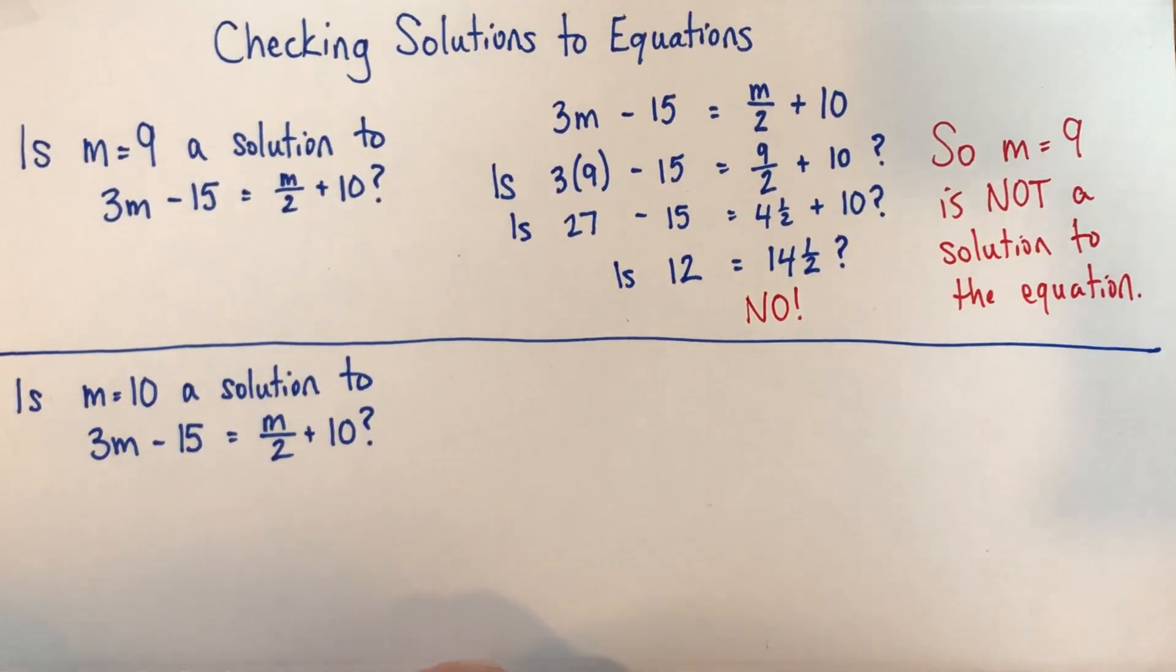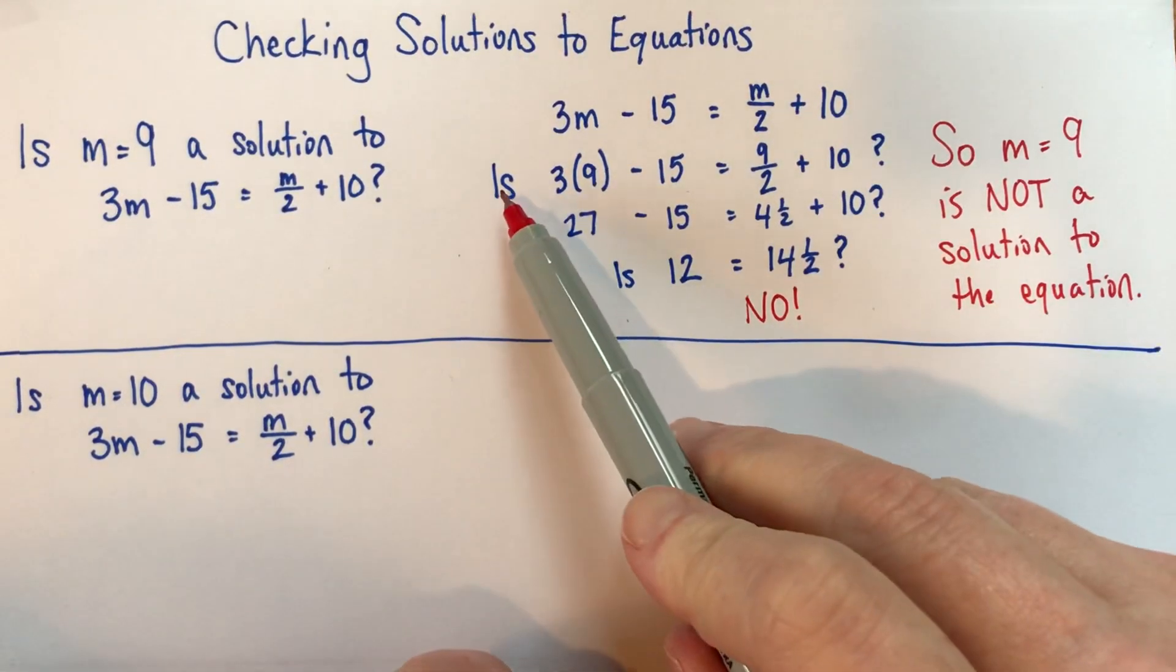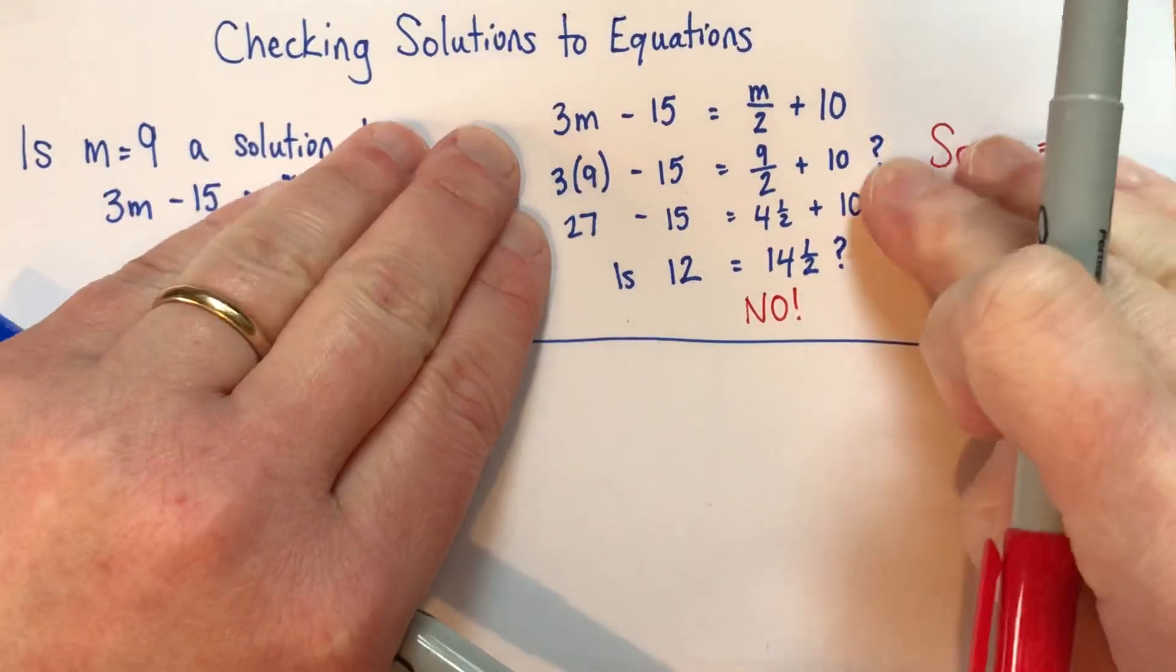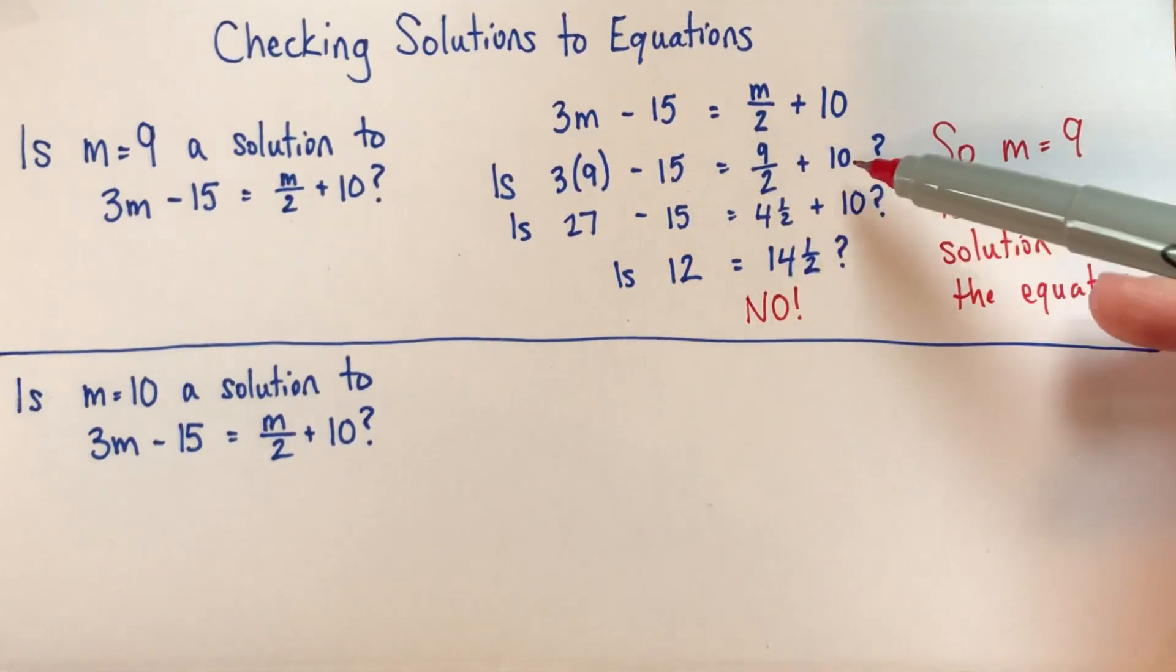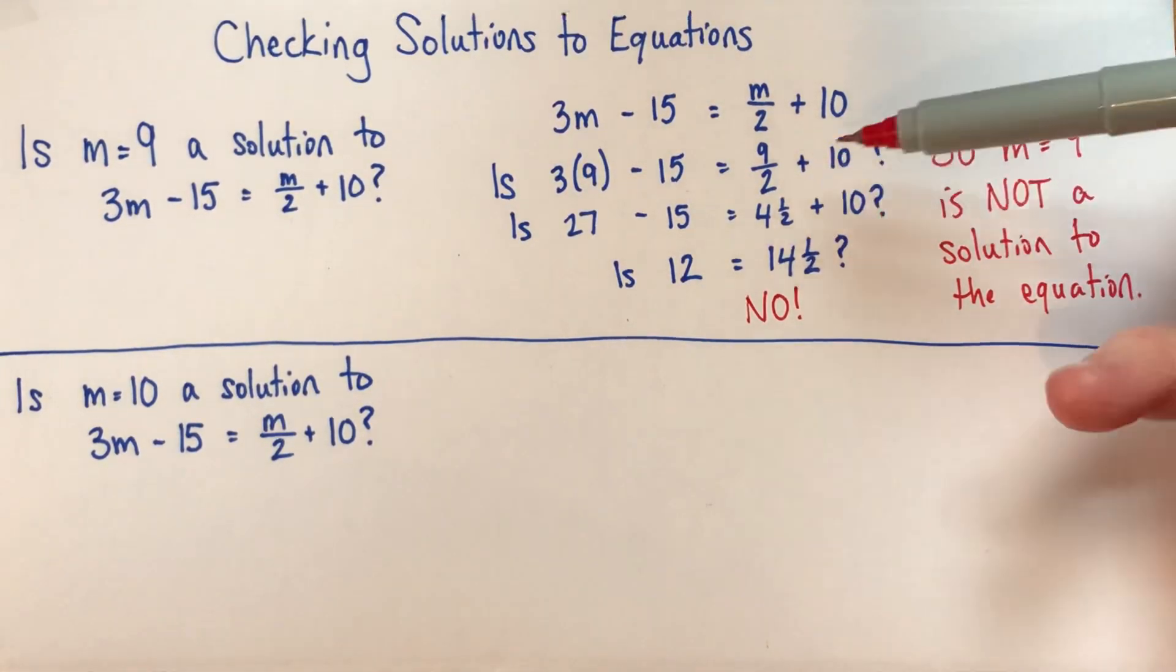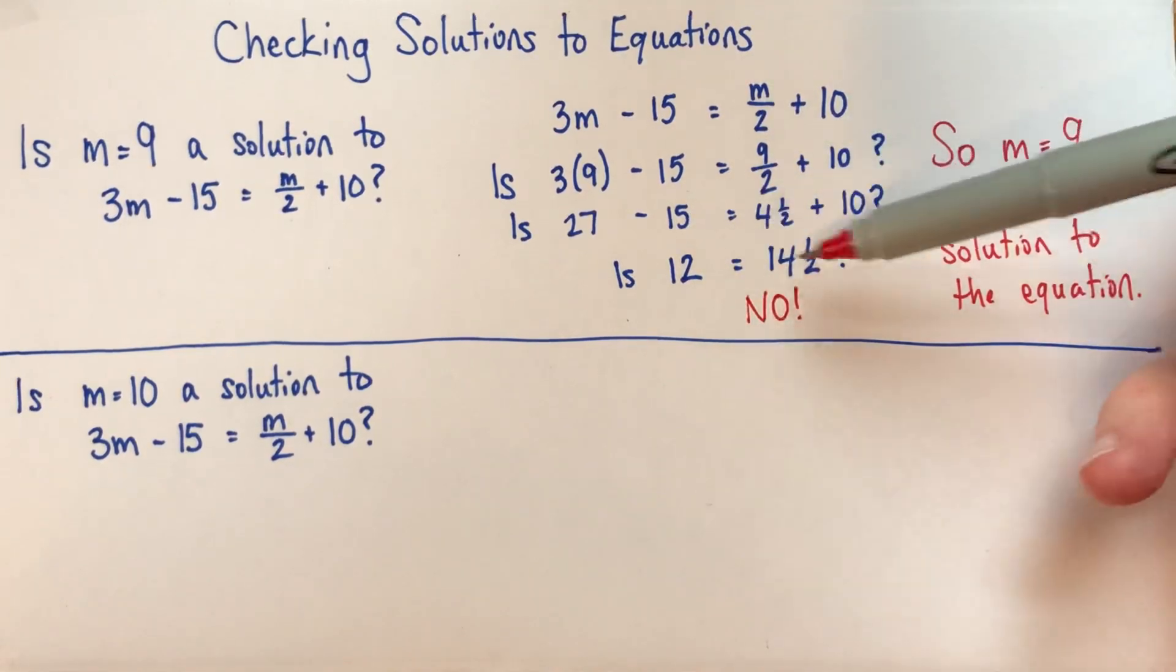Alright, so what I strongly suggest is that instead of starting off the way I did and then going back and adding the word is and the question mark, just start off and write is, and then substitute, and then put the question mark at the end. Just kind of to remind us, this is what we're checking. We're checking to see, are these two things equal?